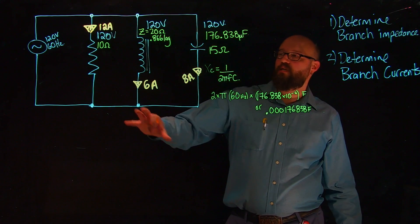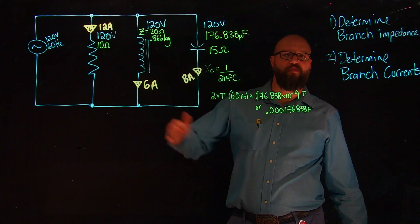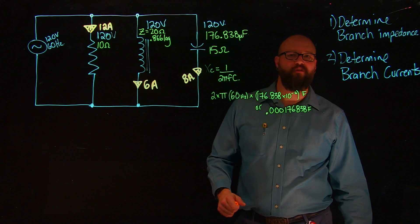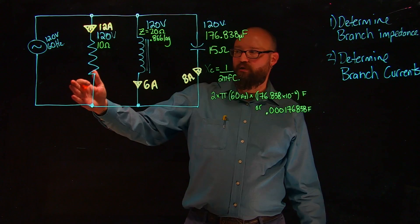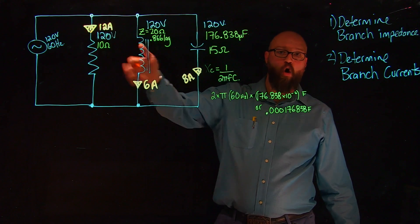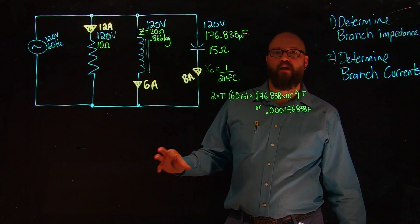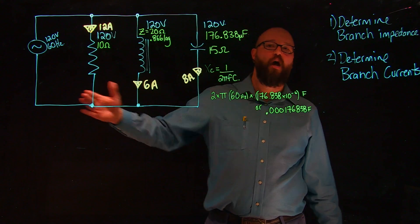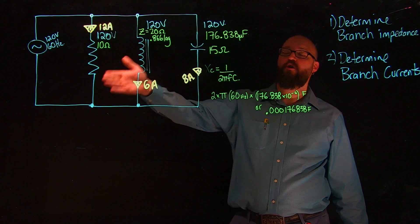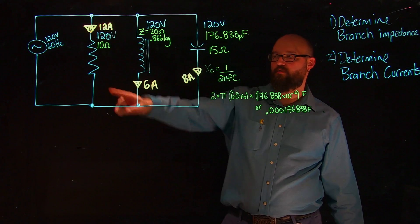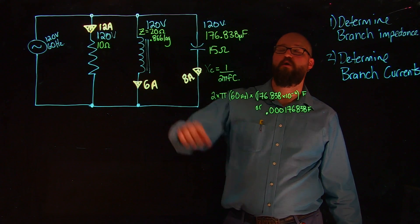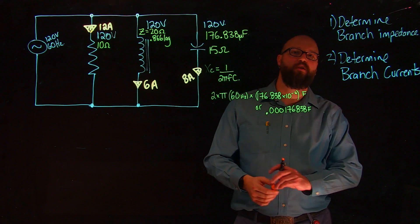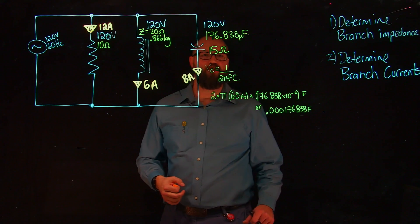This is an RLC circuit. If they were all resistances, I could simply add up the branch currents because they'd all be in phase. But because we have three different components — especially the inductive and capacitive — that are out of phase with each other, I cannot add those branch currents directly. What we're going to do is break this into an HV chart. But before we do that, I want to quickly plot these in the Cartesian plane, not to scale, just to see what happens.